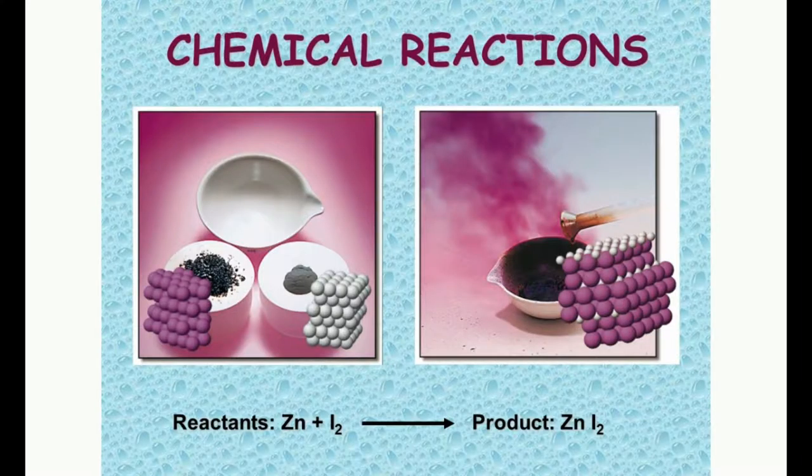Let's take a look at what a reaction looks like. On the left side we have our reactants; products are on the right. Normally you won't see the words reactant and product written out. For example, if we mix zinc and iodine together, they actually react and produce zinc iodide, ZnI₂. It may look like we just squished them together, but that's not what happened.